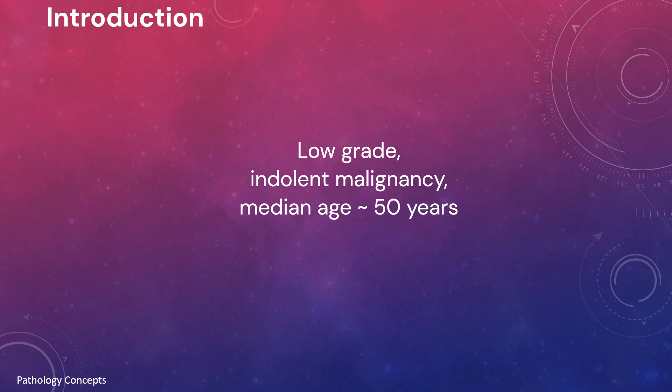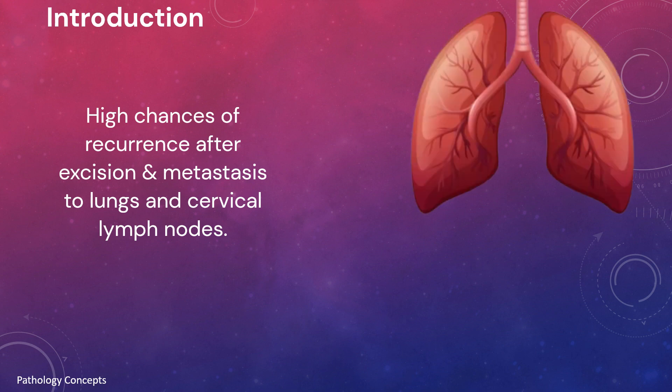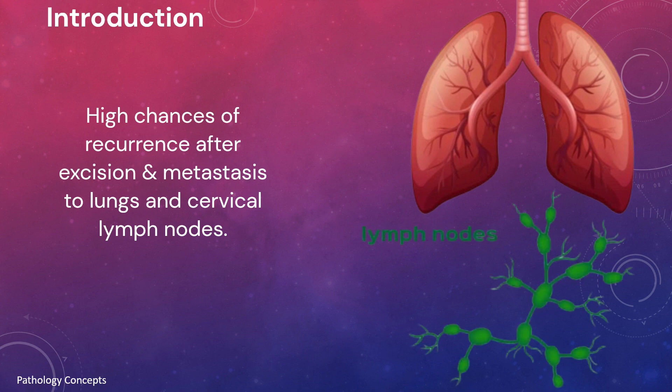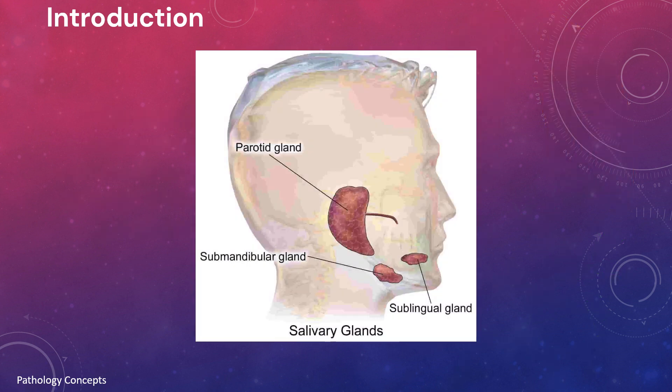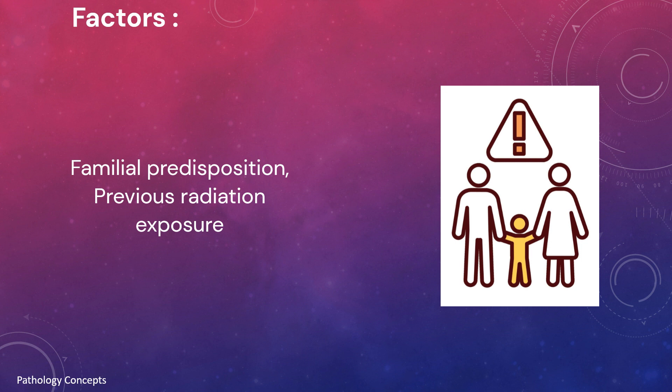It has high chances of recurrence after excision and metastasis to the lung and cervical lymph nodes. The most common site of acinic cell carcinoma is the parotid gland. Factors responsible for causation include familial predisposition and previous radiation exposure.